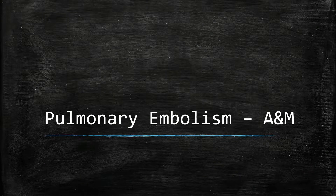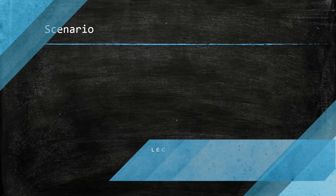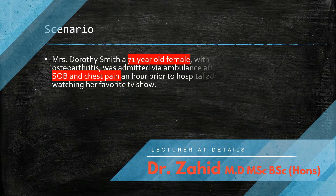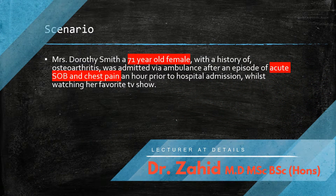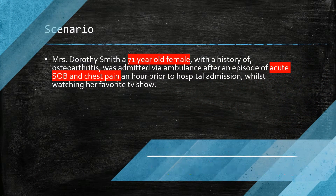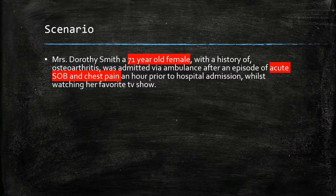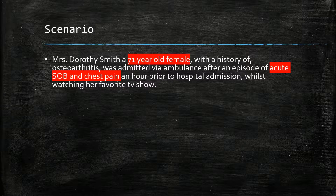Assessment and management of pulmonary embolism. The scenario is as follows: Ms. Dolphie Smith is a 71-year-old female with a history of osteoarthritis, and she came in complaining of acute shortness of breath and chest pain occurring an hour ago whilst watching TV.